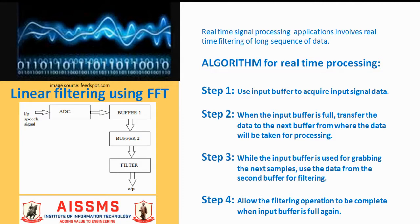The process of Linear Filtering of Long Input Sequence takes place as follows. Step number 1 is to make use of input buffer of suitable size to acquire the input signal data, as we want to make use of FFT computation. Step number 2: when the input buffer is full, transfer the data to the next buffer from where the data will be taken for processing.